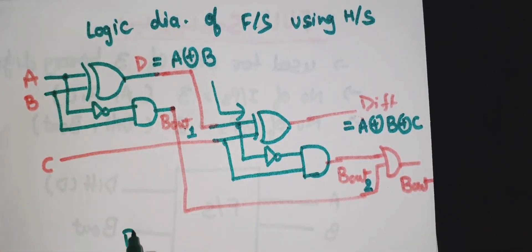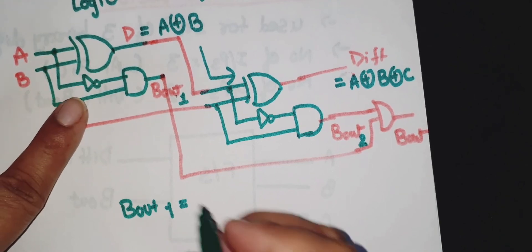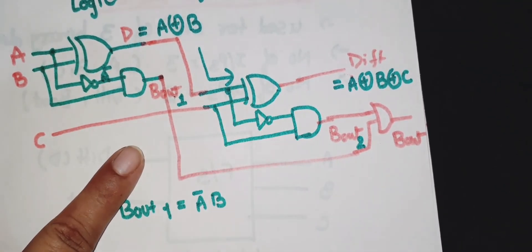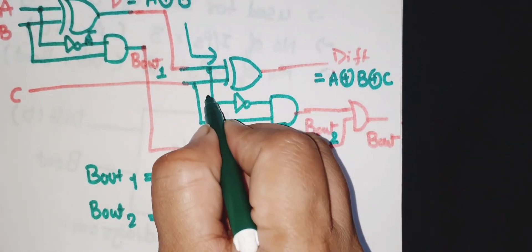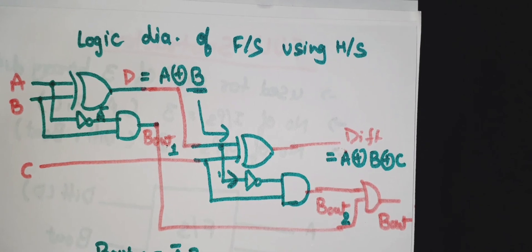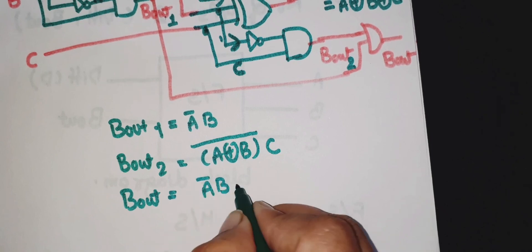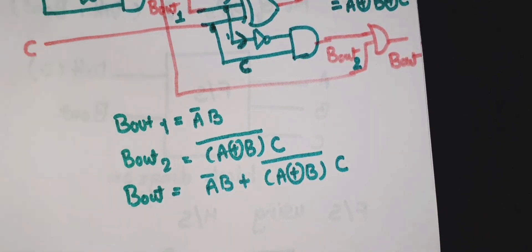Now B_out: this is B_out one and this is B_out two. B_out one is equal to A-bar · B. The second B_out two is equal to — looking at the diagram, the first input is A XOR B inverted, multiplied with C. So the final B_out is equal to A-bar · B + (A XOR B)-bar · C. This is the final B_out.